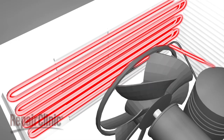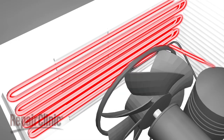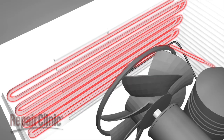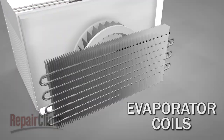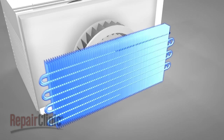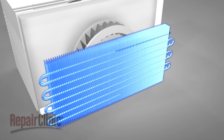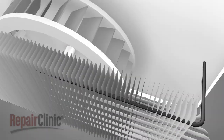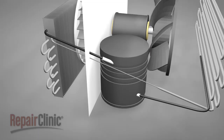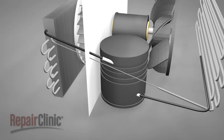Once the refrigerant has passed through the condenser coils and the capillary tube, it travels to the evaporator coils, located near the front of the unit. As the refrigerant liquid enters these coils, it expands into a gas, which makes the coils cold. The gas flows through the coils to a suction line attached to the compressor. The compressor converts the gas back into a liquid, and the cooling cycle continues.